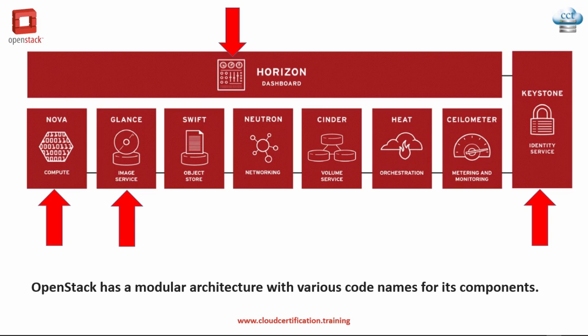Swift, which we'll talk about next, is the object store. You could have a Windows image or a Linux image — whatever sort of virtual image you want — and you could store it on Swift, then just launch it from your Horizon dashboard. Launch your Nova compute image and it will get the image from Swift. The image service API provides a standard REST interface for querying information about disk images and lets clients stream the images to new servers.